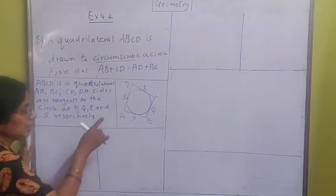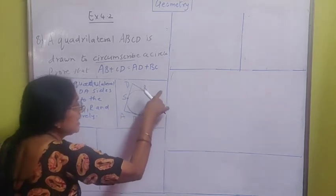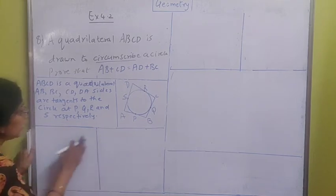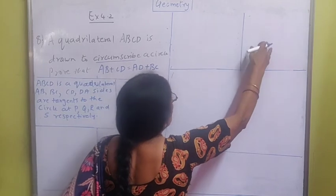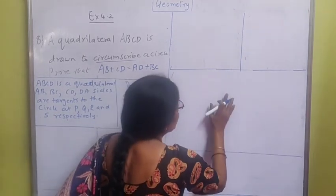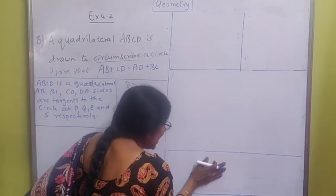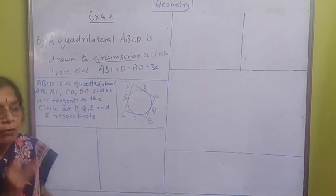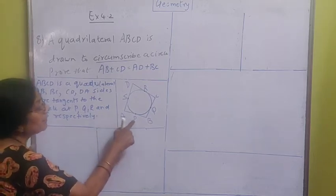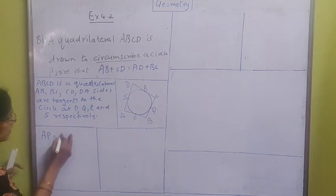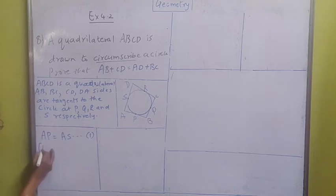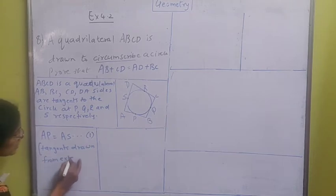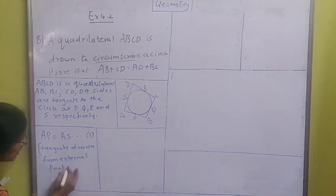So we are going to get four equations - with A as external point, B as external point, C as external point, and D as external point. First equation: AP is equal to AS. The reason is tangents drawn from external point A.